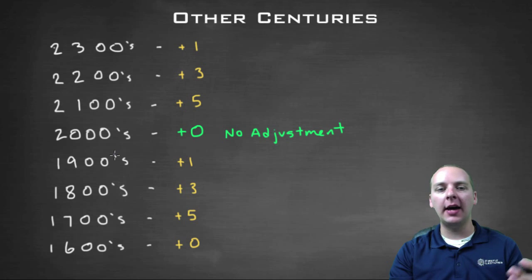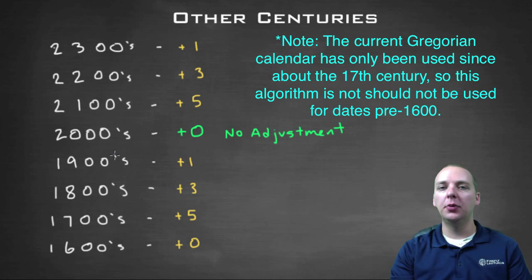If it's in the 1800s, you take that same year as if it were in the 2000s and add three. 1700s, you'll add five. The 1600s is back around to zero again, and you actually wouldn't need to make any adjustment. It would be the same day of the week as the same calendar date in the 2000s. There's also adjustments for the 22nd century, 23rd, and 24th century, the 2100s, the 2200s, and the 2300 calendar dates. And that's plus five, plus three, and plus one, respectively.